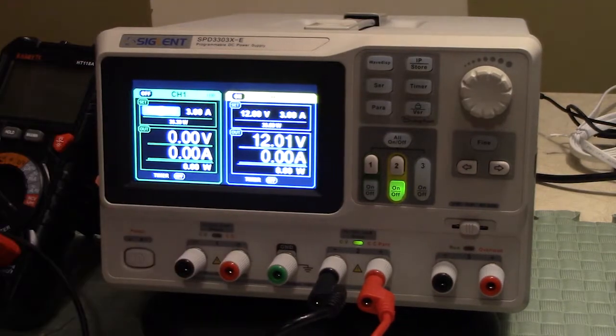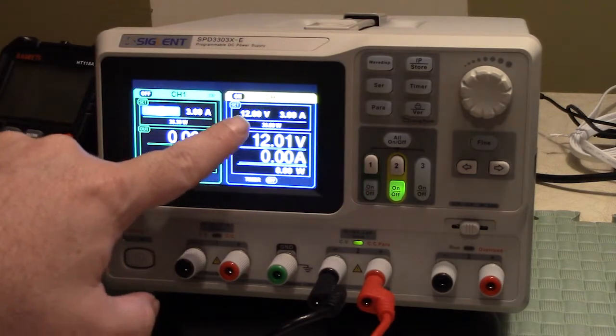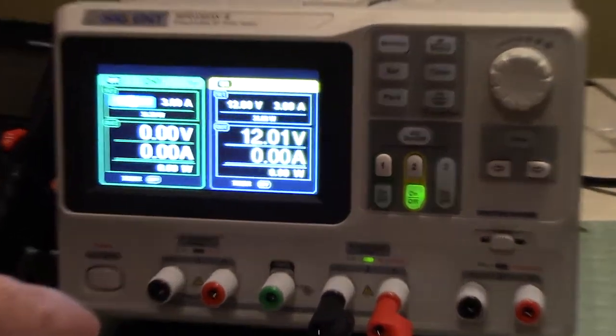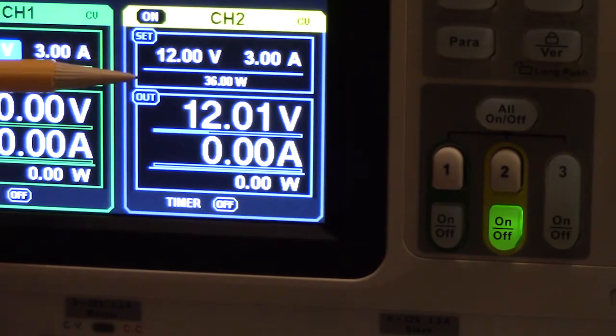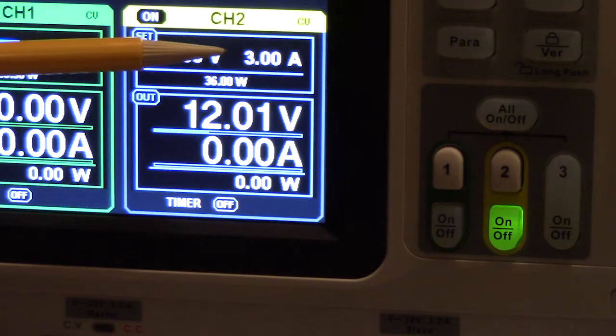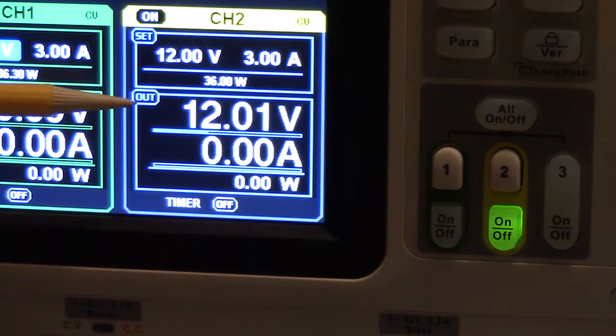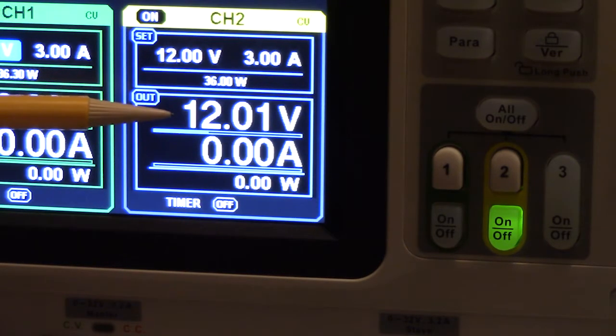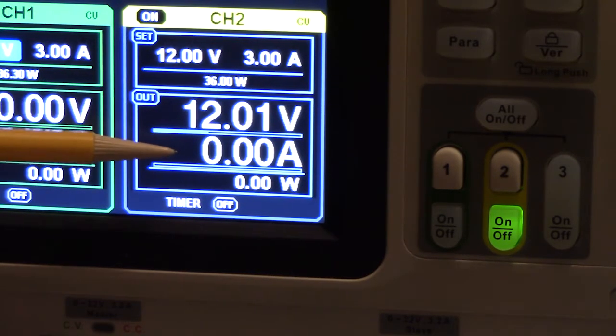The first thing we're going to do is a simple no load voltage check. We're going to use channel 2, so this is your set line here. We've set it to output 12 volts and limit to 3 amps. And this is our feedback line. This shows the output it measures back is 12.01 volts and we're not drawing any power at all because we're in a no load situation.